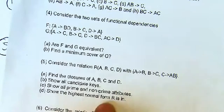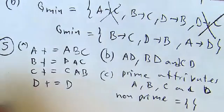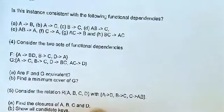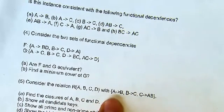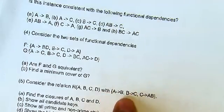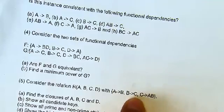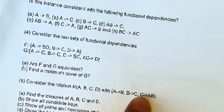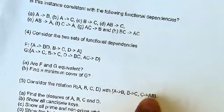Finally, we determine the highest normal form of R. We check every functional dependency. For A→B: is A a super key? No. Is the right-hand side B a prime attribute? Yes. For B→C: is B a super key? No. Is C prime? Yes. For C→AB: is C a super key? No. Are the right-hand side attributes prime? Yes. So all functional dependencies satisfy 3NF conditions.